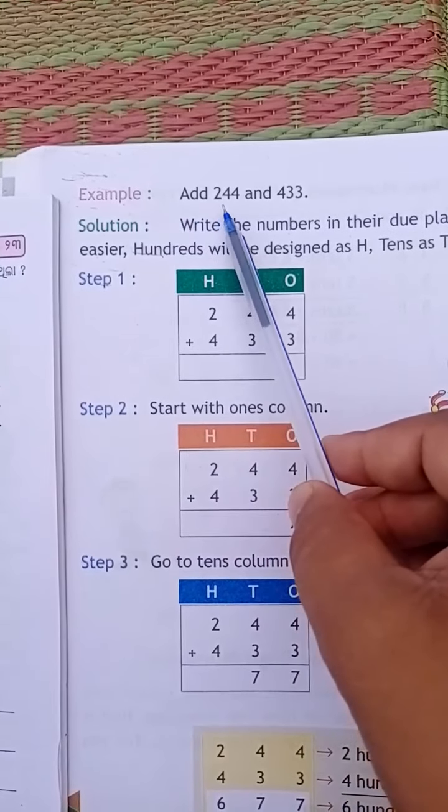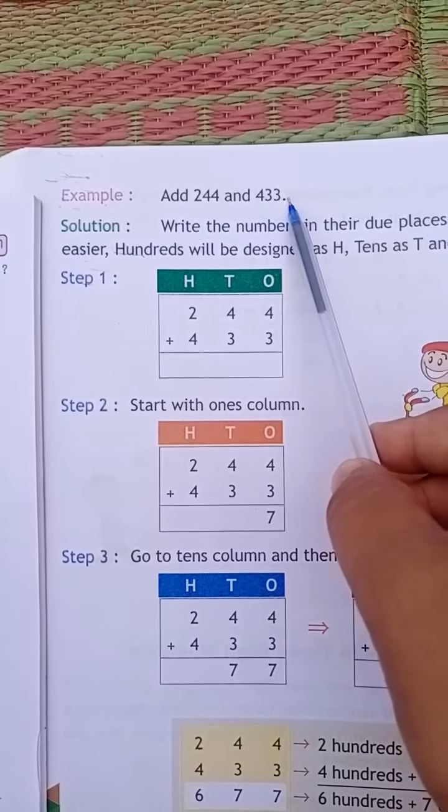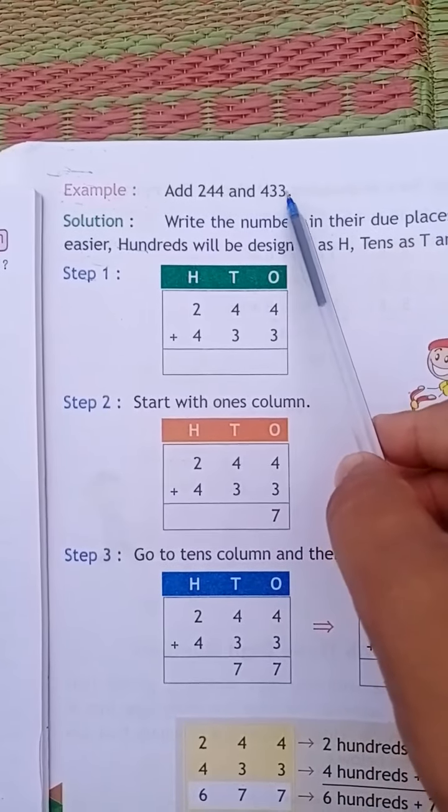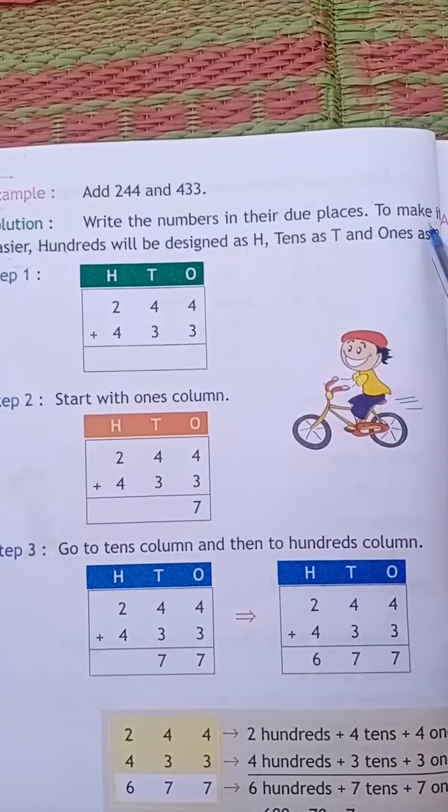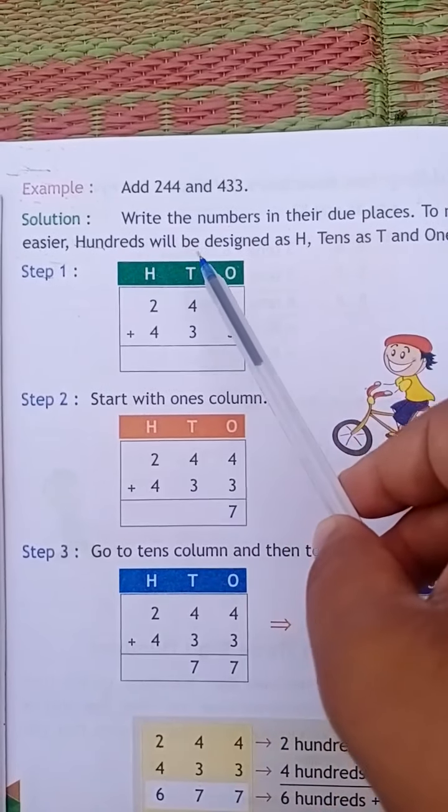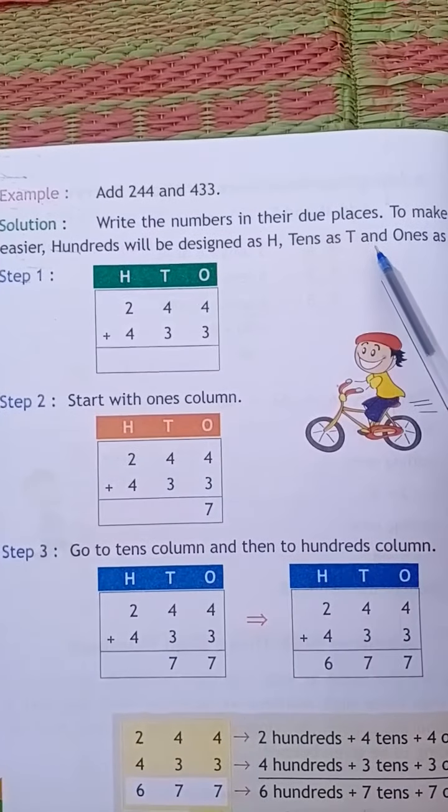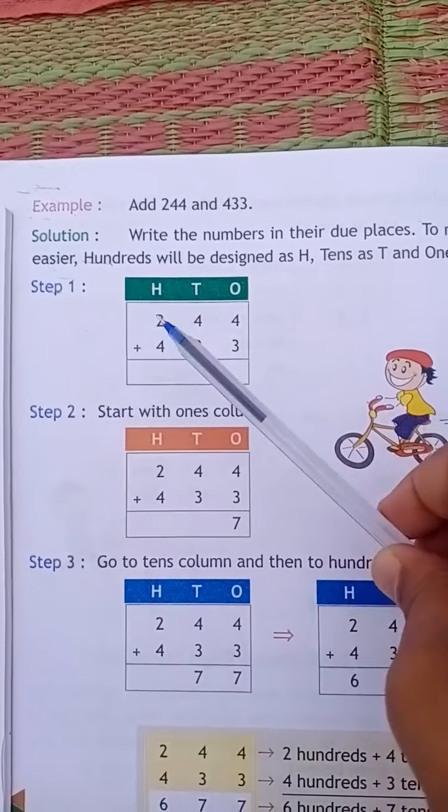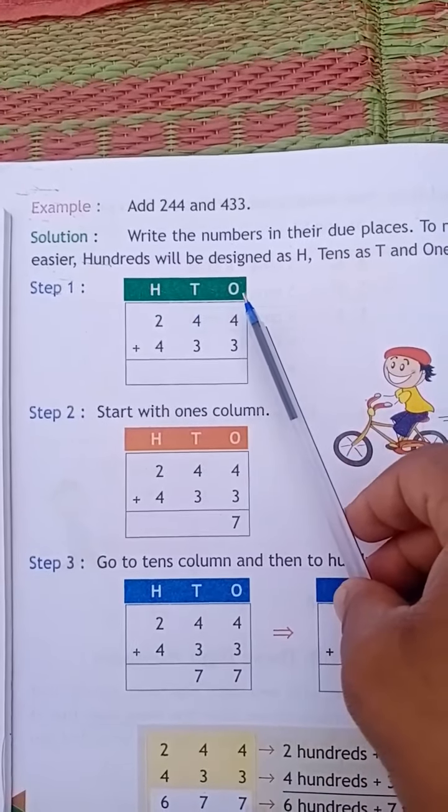Example: add 244 and 433. This number is also a three digit number, and here is also a three digit number. Write the numbers in their due places. To make it easier, hundreds will be designated as H, tens as T, and ones as O.